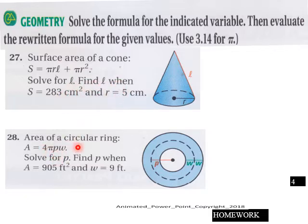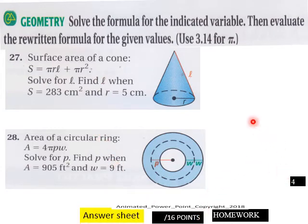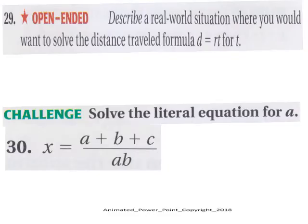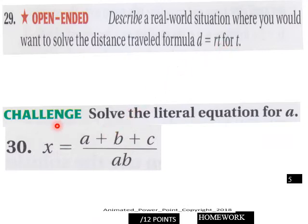So solve the formula for the indicated variable. Solve for l, find l when blah blah blah. And then same down here, solve for p. So anyway, do it the way that is indicated here, and you got 16 points here for page four.